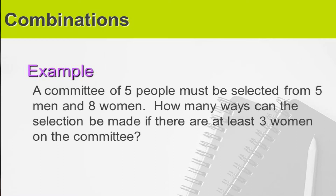A committee of five people must be selected from five men and eight women. How many ways can the selection be made if there are at least three women on the committee? At least three women means the minimum number of women is three, four, or five.